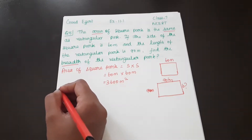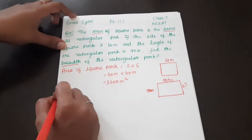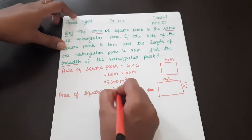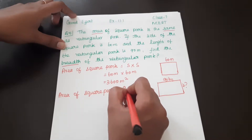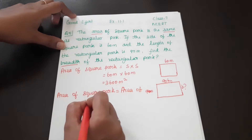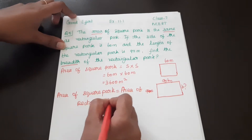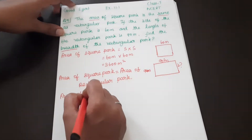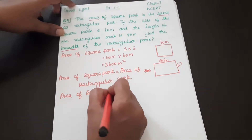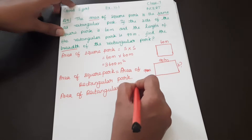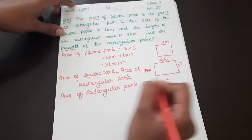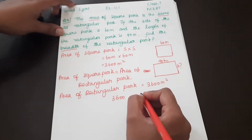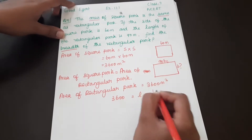Area of square park is equal to area of rectangular park. So area of rectangular park is equal to 3600 meter square. The area of a rectangle is equal to L into B.